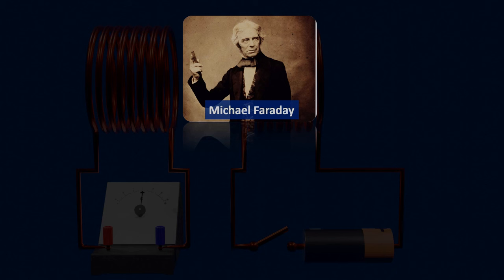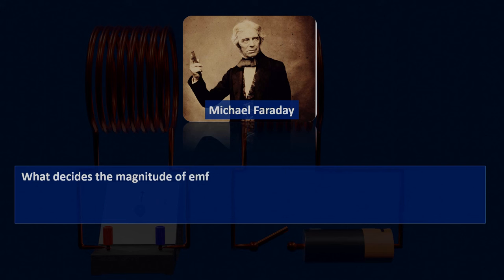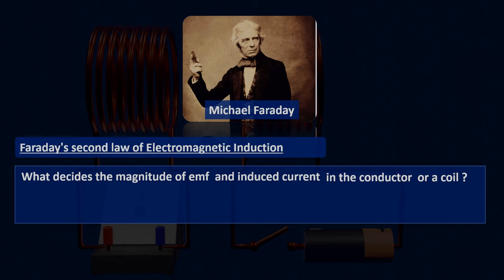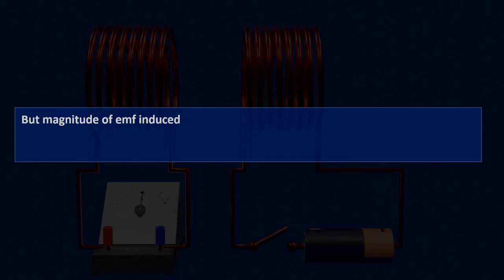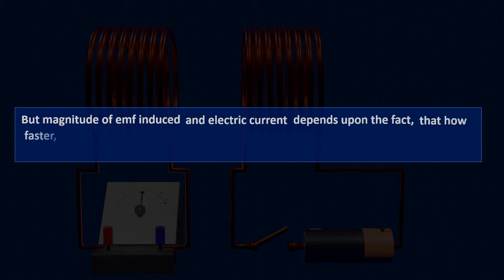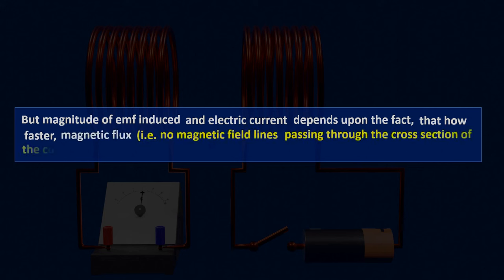Faraday's first law of electromagnetic induction only talks about the induced EMF and current, but it does not explain what decides the magnitude of EMF and induced current in the conductor or coil. Therefore, to answer this question, Faraday gave the second law of electromagnetic induction. It is now clear that change of magnetic flux induces current in the conductor, but the magnitude of EMF induced and electric current depends upon how fast the magnetic flux — that is, the number of magnetic field lines passing through the cross section of the coil — increases or decreases.